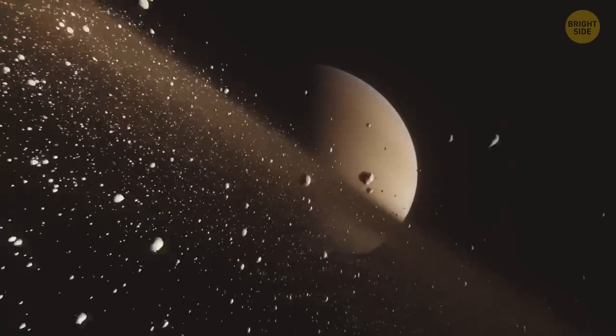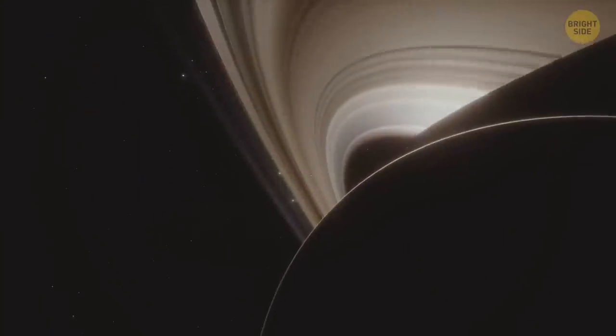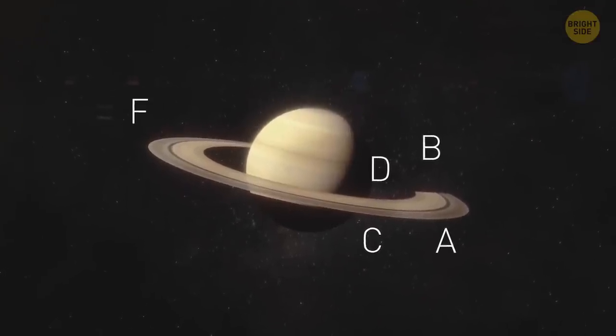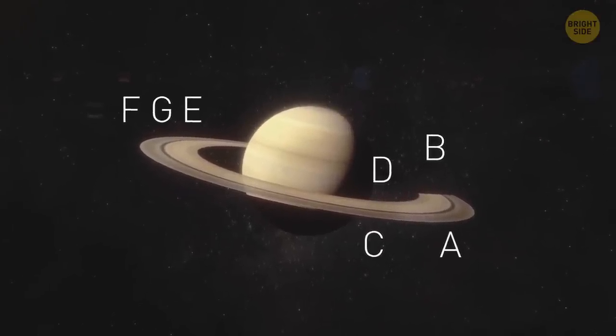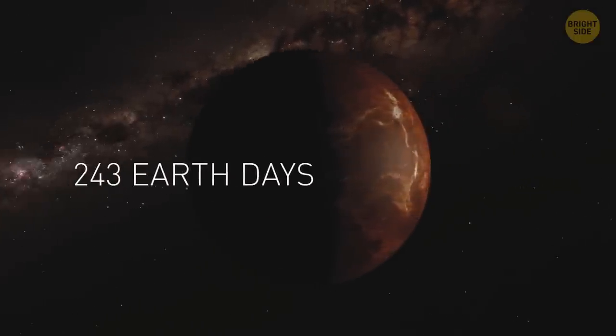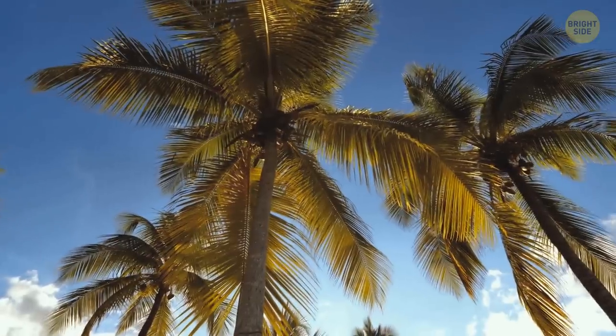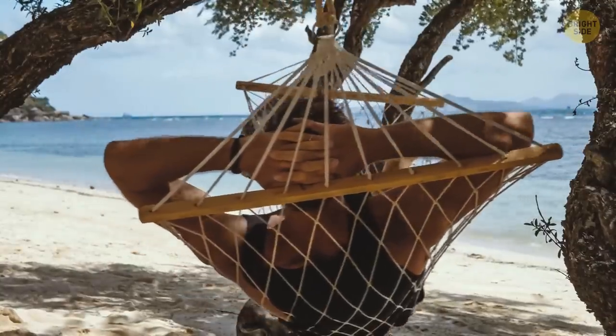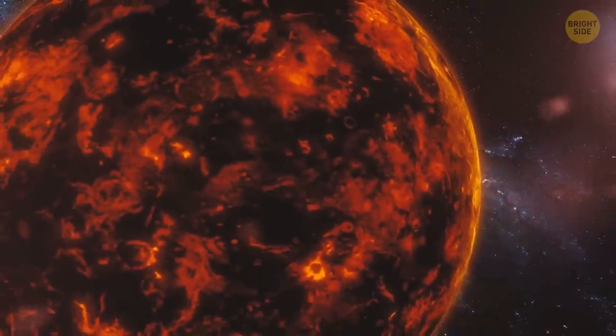Saturn's rings weren't discovered all at once. It happened gradually. That's why they were named alphabetically, in the order scientists found them. Now they go like this, D, C, B, A, F, G, and E. A day on Venus is around 243 Earth days long, but the bad news is that you'd have to wait for a weekend for three years, all because a day on Venus is longer than its year.